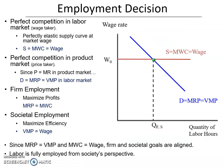With that in mind, let's look at how a firm makes the employment decision in a perfectly competitive market. We're assuming perfect competition in the labor market, meaning the firm is a wage taker, and perfect competition in the product market, meaning the firm is a price taker when it sells its product. The firm will be able to hire as many workers as it wants at the market wage and sell as much of its product as it wants at the market price, but it has no ability to control the wage or the price it sells its product for.